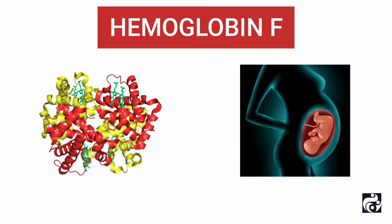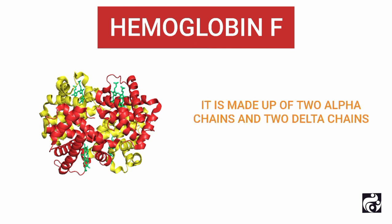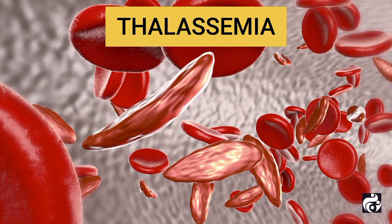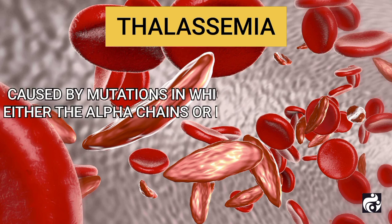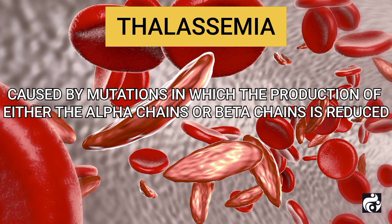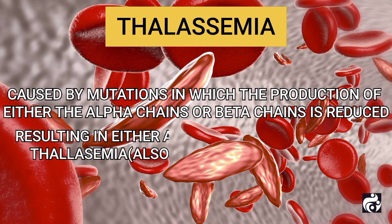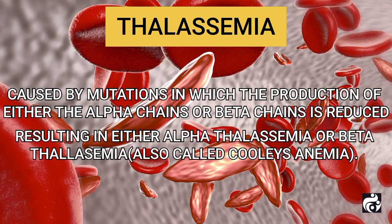Hemoglobin F, which is found in the fetus and disappears after birth, is made up of two alpha chains and two delta chains. Thalassemia, which is a hemoglobin disorder, is caused by mutations in which the production of either the alpha or beta chains is reduced, resulting in either alpha thalassemia or beta thalassemia, which is also called Cooley's anemia.